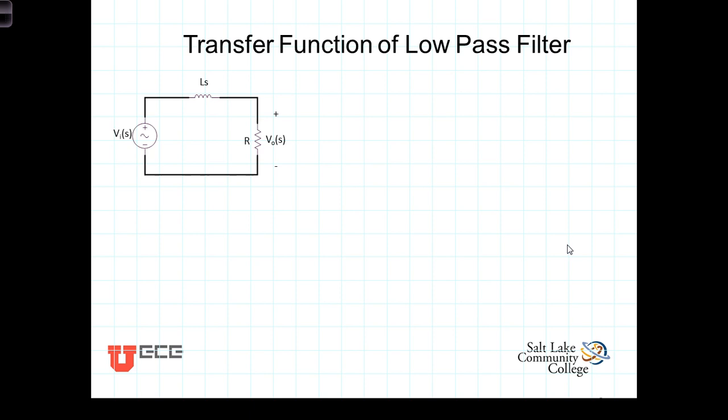So for this circuit here, we have a voltage source represented by the Laplace transform of that input signal. We define an output voltage as the voltage across this resistor, once again defined as the Laplace transform of that output. And we have here the inductor represented with its Laplace impedance.